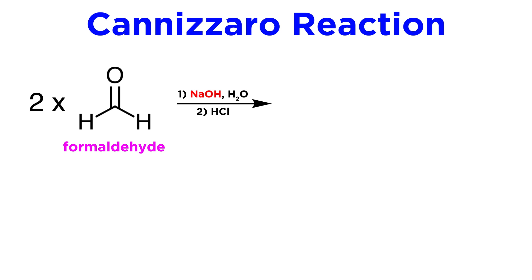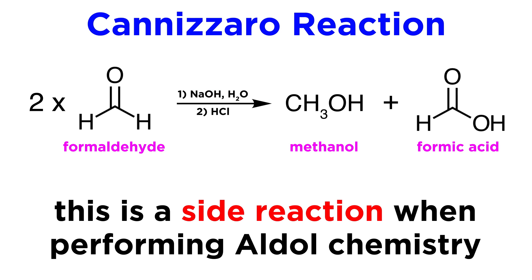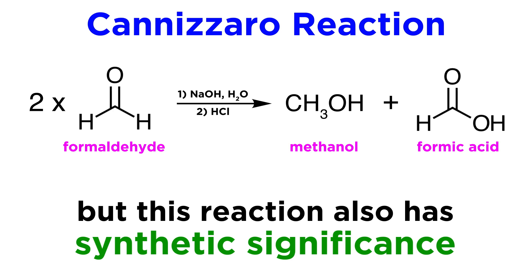For example, when using formaldehyde under basic conditions, a very important side reaction will be its Cannizzaro reaction to yield methanol and formic acid, which in many cases can participate in further side reactions. As we will see in a moment, clever applications of the Cannizzaro chemistry have been devised, and therefore the reaction also has synthetic significance.